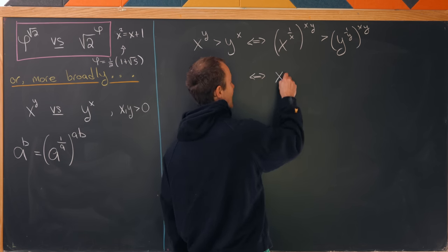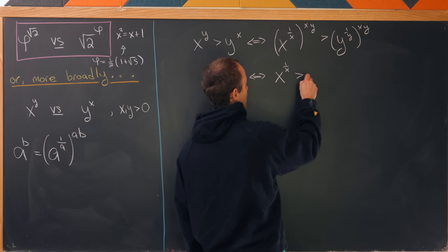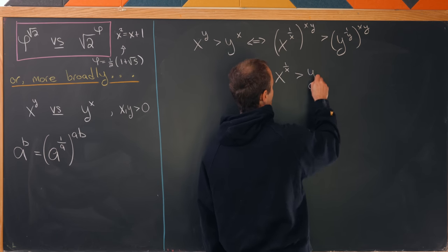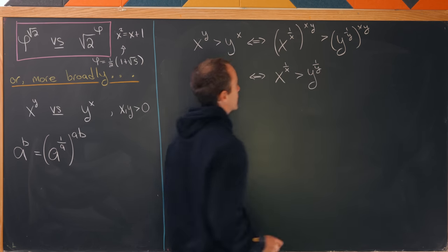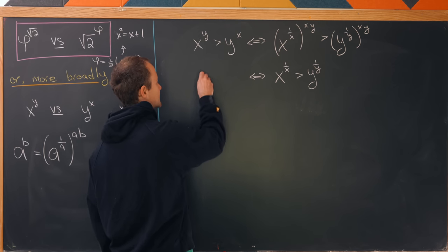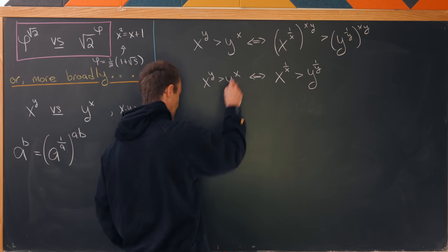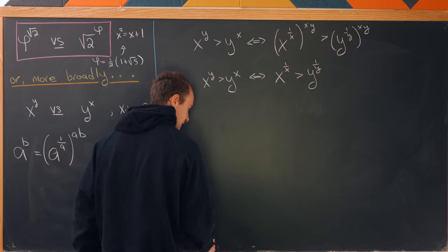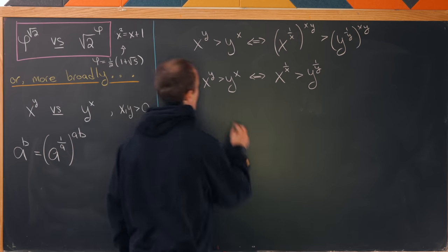So in other words this is equivalent to x to the power 1 over x is bigger than y to the power 1 over y. And now let's bring this down so we've got a nice way to test this which is larger question.